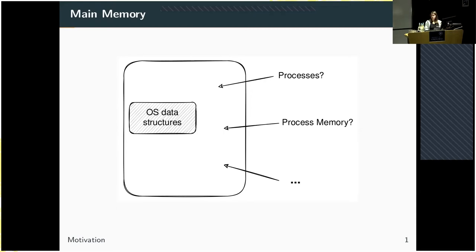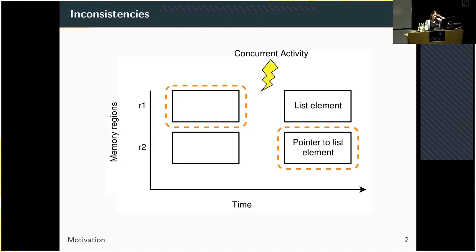One effect of this — which many people have heard about — is page smearing. We get inconsistencies between the entries in the page tables and the actual contents in the page frames. A simplified example can be seen here, where we have two memory regions, R1 and R2, on the y-axis and the progression of time on the x-axis.